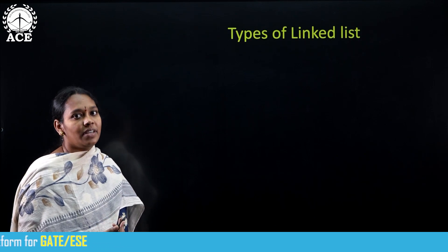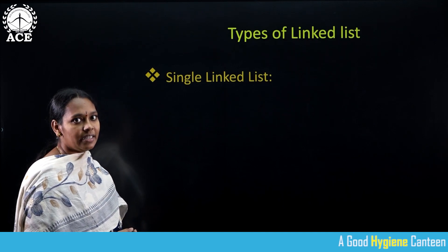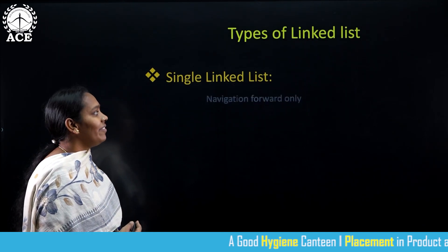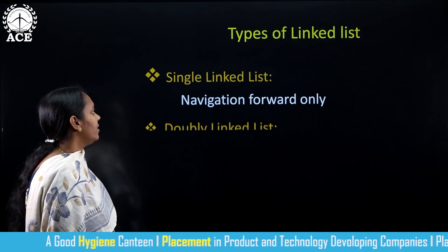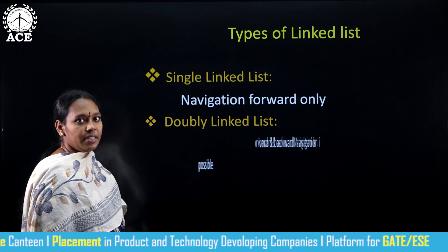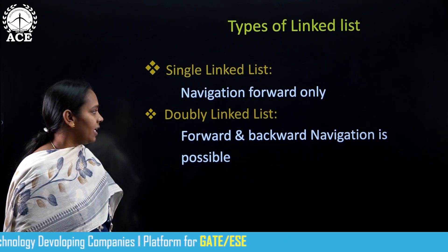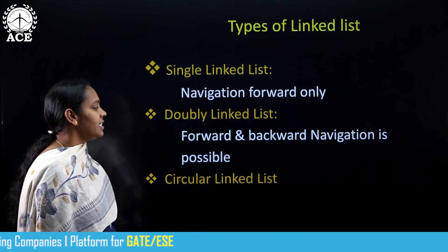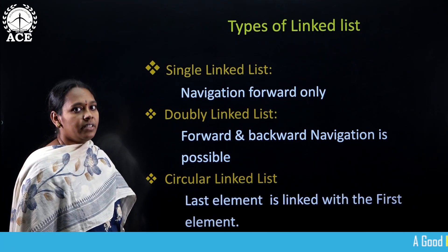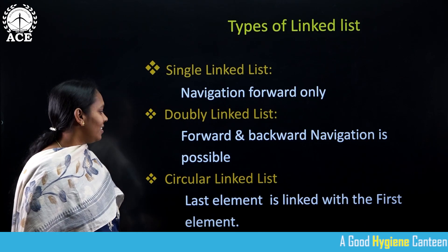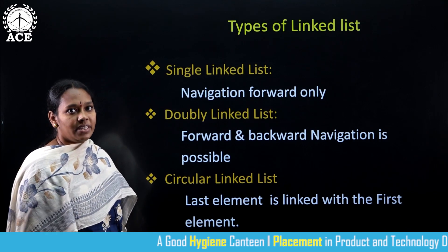Now let us see the different types of linked list. The first one is single linked list. In single linked list, it is a collection of nodes and the navigation is in the forward direction only — we can only go forward. The second type is double linked list, in which we can move in the forward direction as well as the backward direction. The next one is circular linked list, where the last element is connected with the first element, forming a circle — that is why it is called circular linked list.